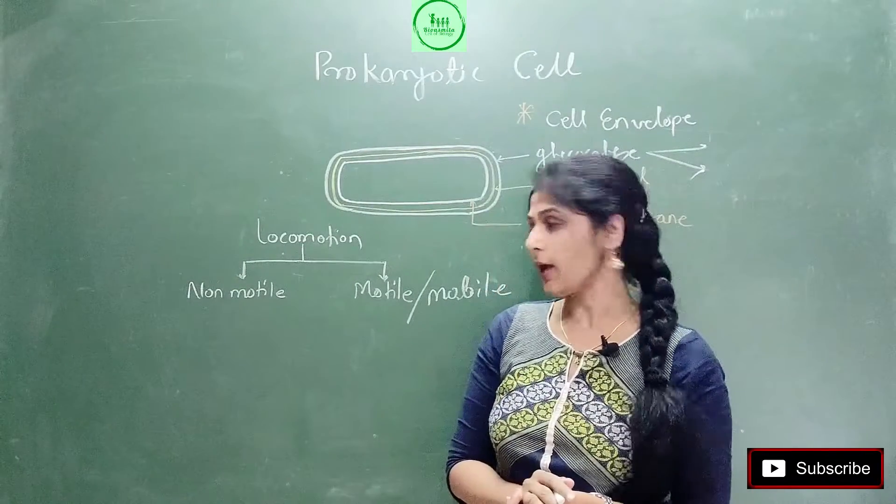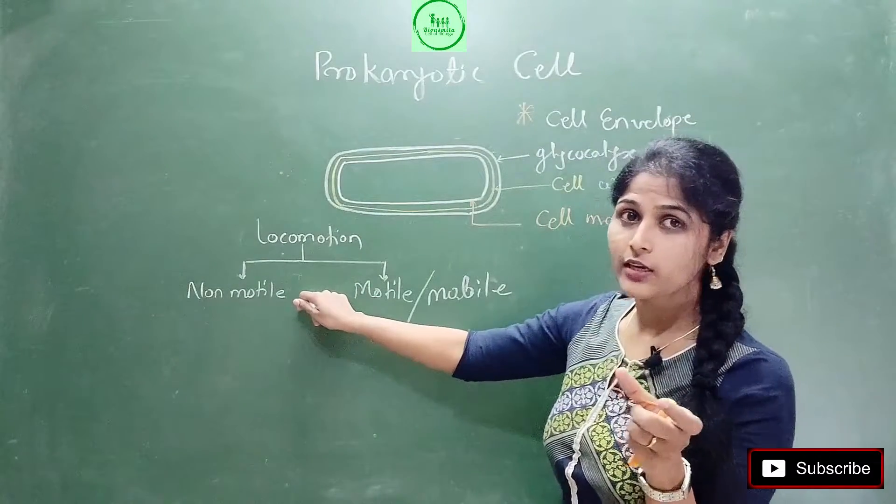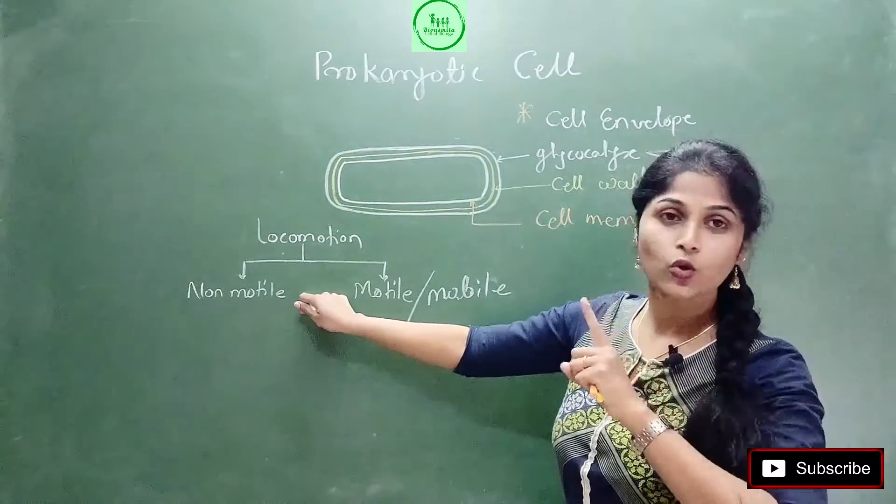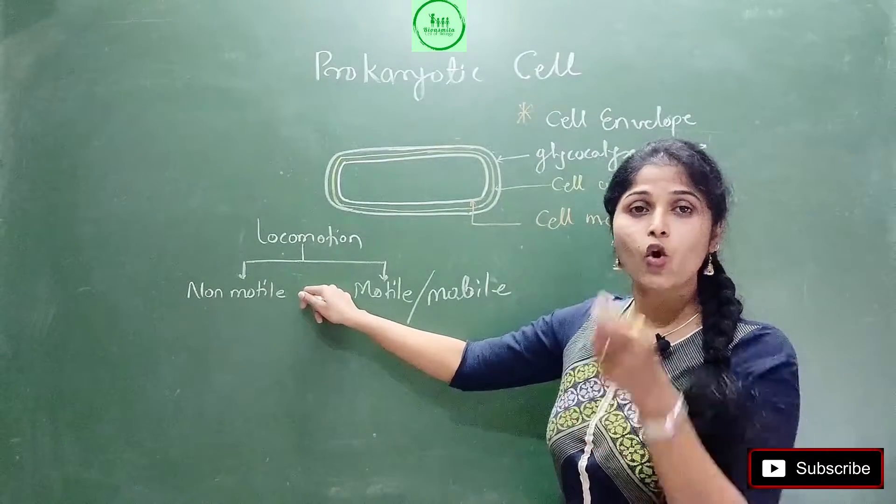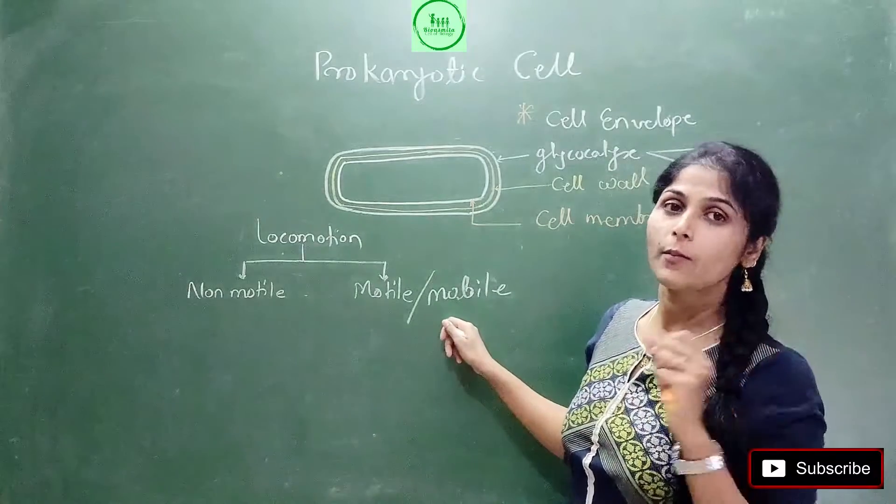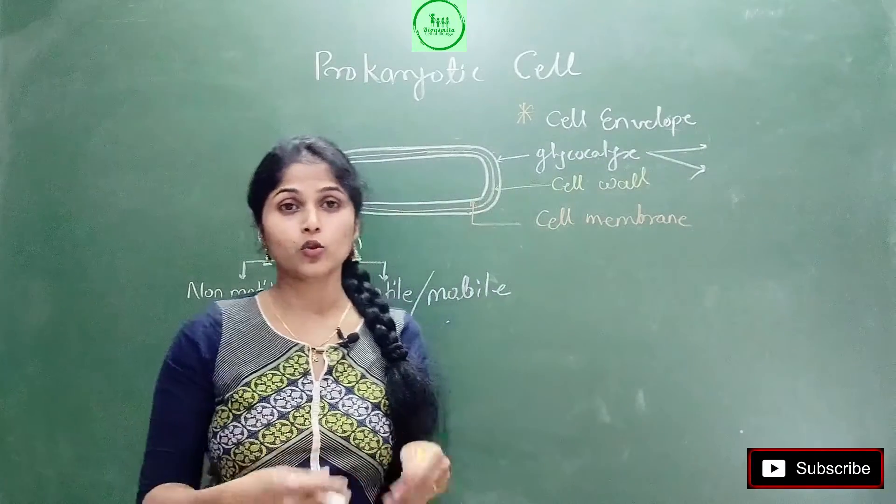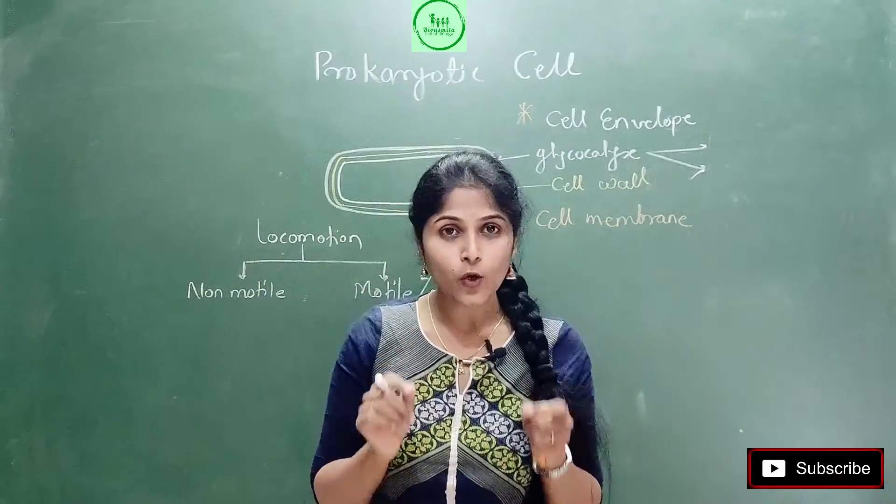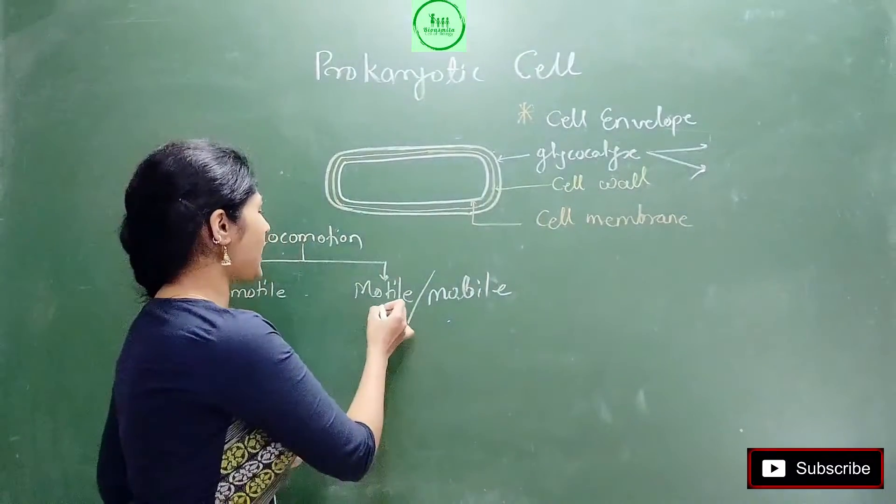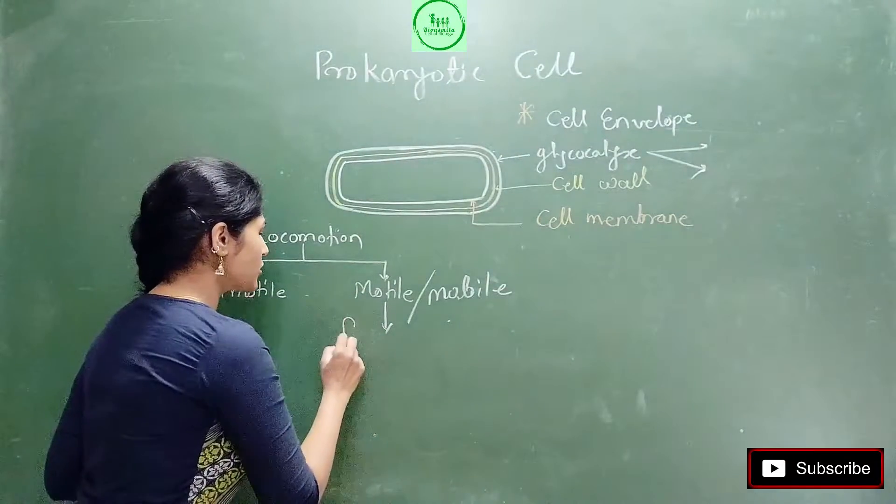Now coming to bacteria - there are some bacteria who are non-motile, meaning they don't do locomotion, they are fixed in one place. And some bacteria are motile. Just like we have legs for locomotion, bacteria have special structures.